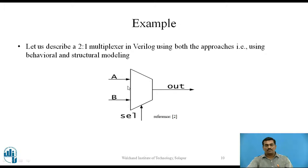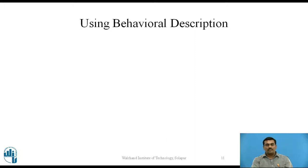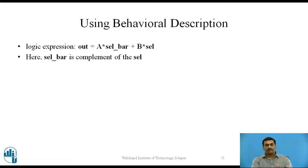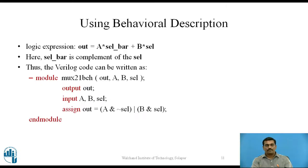This is the block diagram of the 2-to-1 multiplexer. A and B are the data inputs, SELECT is the control input, and OUT is the output. A multiplexer, by its definition, is a many-inputs one-output circuit. Depending upon the select input, the output equals either A or B. Using the Behavioural approach we require its logic expression: OUT = A·SELECT_bar + B·SELECT, where SELECT_bar is the complement of the SELECT input.